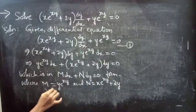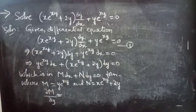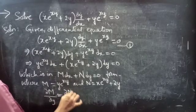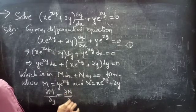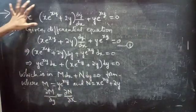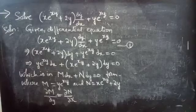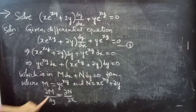If the partial derivative of M with respect to y equals the partial derivative of N with respect to x, then we can say that the given differential equation is an exact equation. So we will find the partial derivatives of M and N.